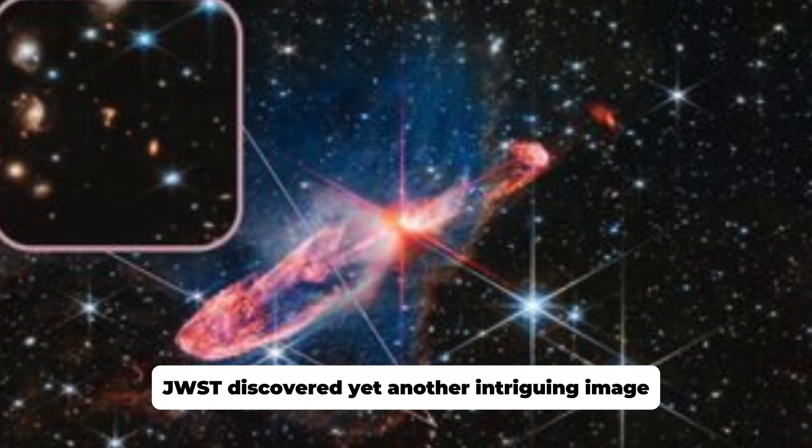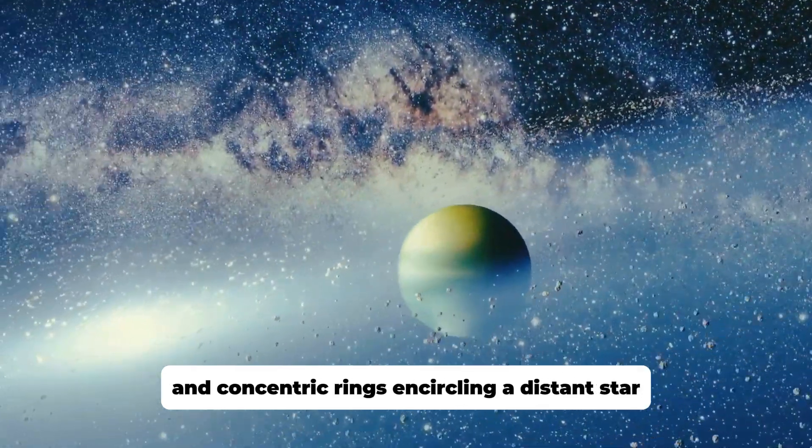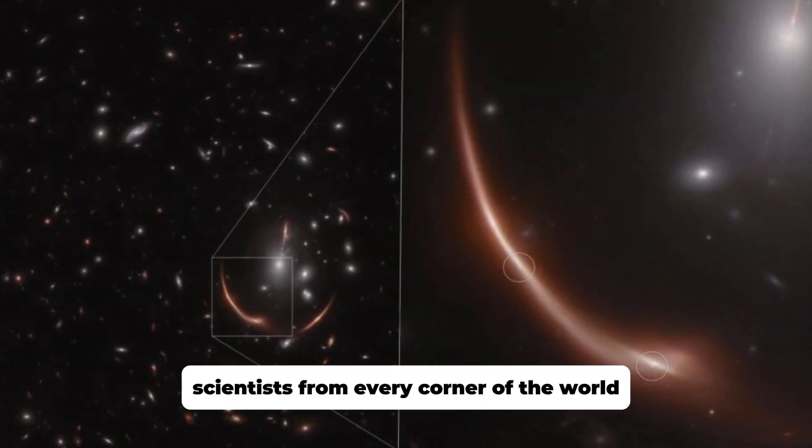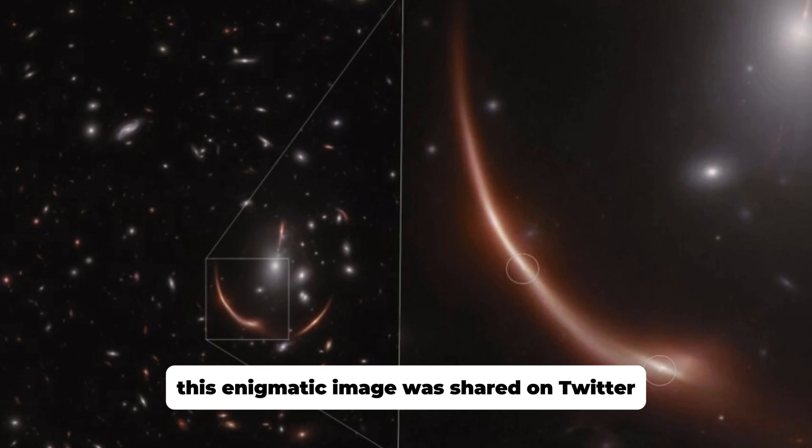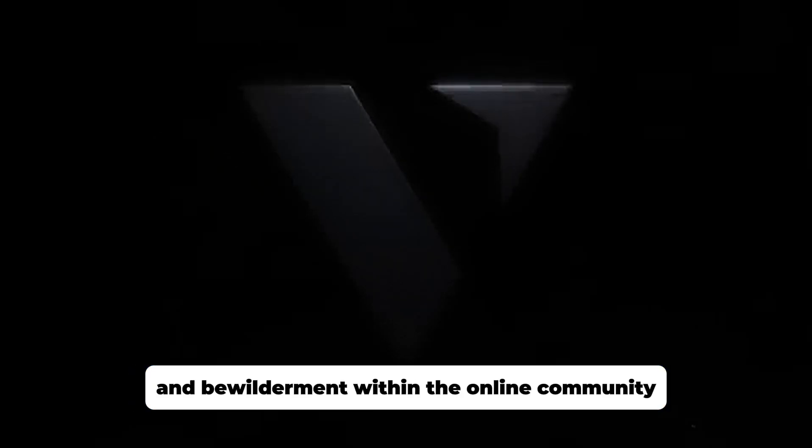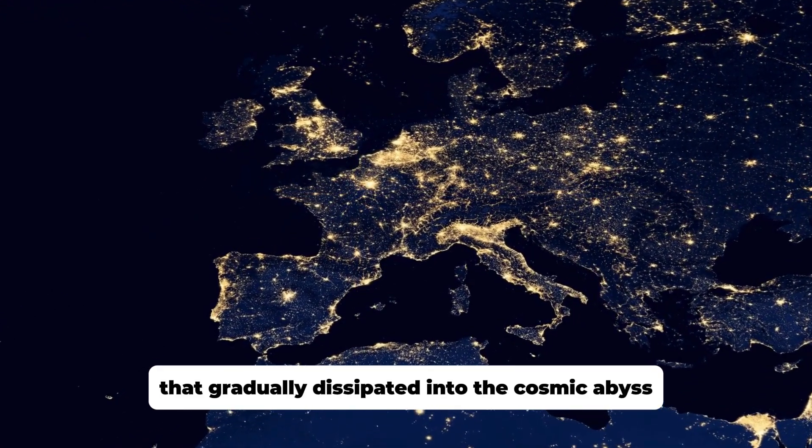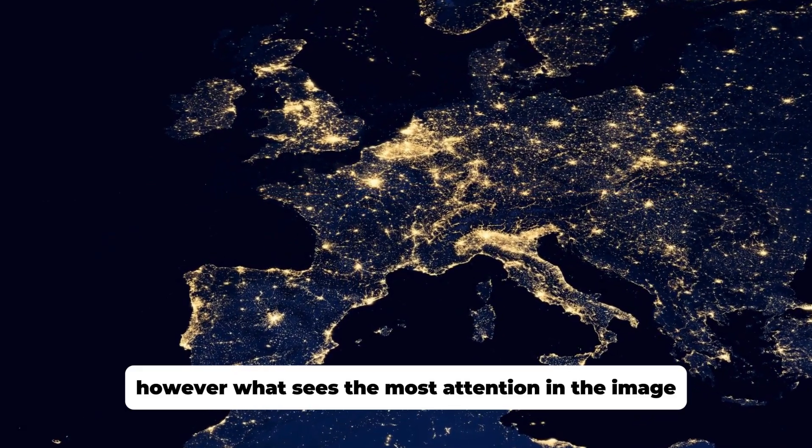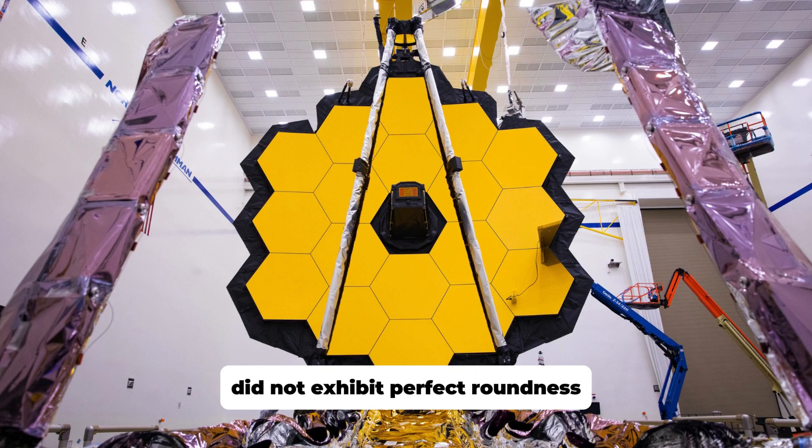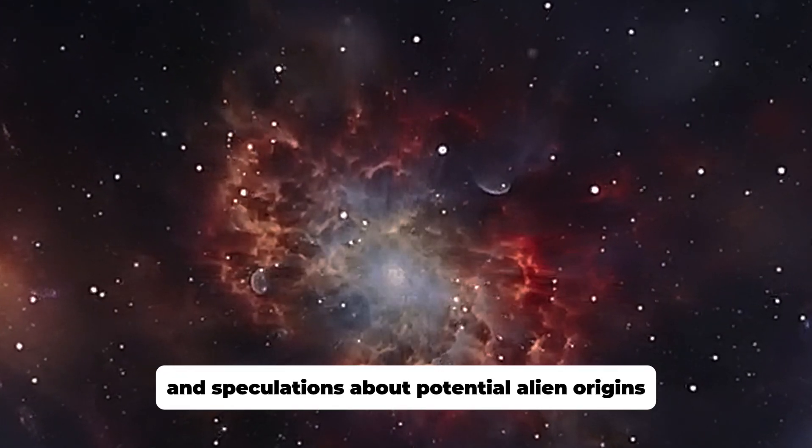JWST discovered yet another intriguing image that clearly depicted a series of mysterious and concentric rings encircling a distant star. Since this image arrived on Earth, scientists from every corner of the world have been left puzzled. This enigmatic image was shared on Twitter by a citizen scientist named Judy Schmidt, swiftly igniting a flurry of comments and bewilderment. The featured star, known as WR140, was surrounded by regular ripple-like circles. However, what seized the most attention was that the circles did not exhibit perfect roundness. Instead, they were somewhat square-like, stirring theories about potential alien origins.